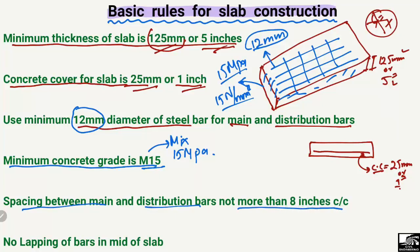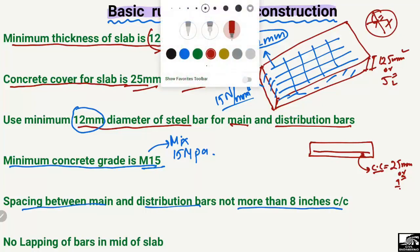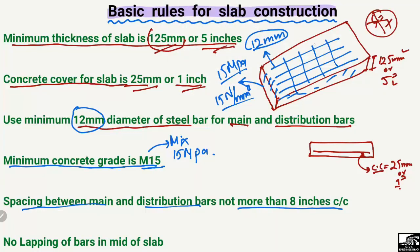The next rule is that the spacing between the main and distribution bars should not be more than 8 inches center to center. The spacing of the bars should not exceed 8 inches center to center. Similarly, in the case of the distribution bars, the spacing should also not be more than 8 inches center to center. This is another important rule in the construction of the slab.